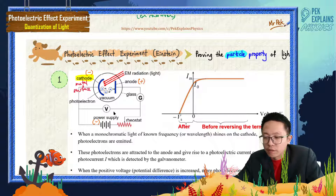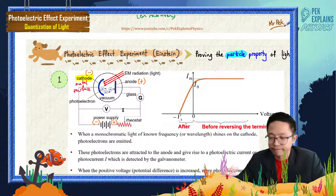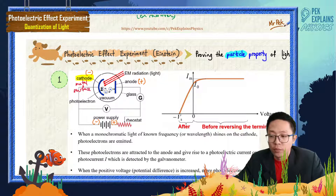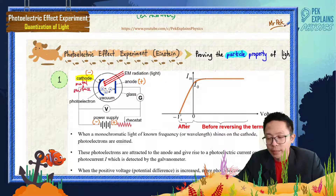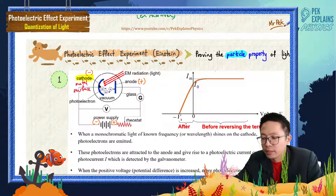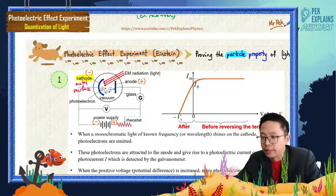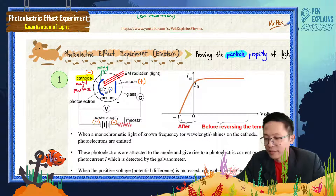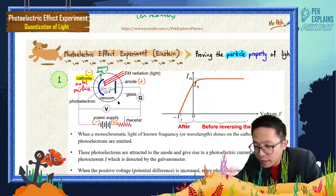The cathode is a negative terminal because it is connected to the negative terminal of the power supply. Anode is positive because it is connected to the positive terminal. That is why the cathode is known as the metal surface which has many, many free electrons.